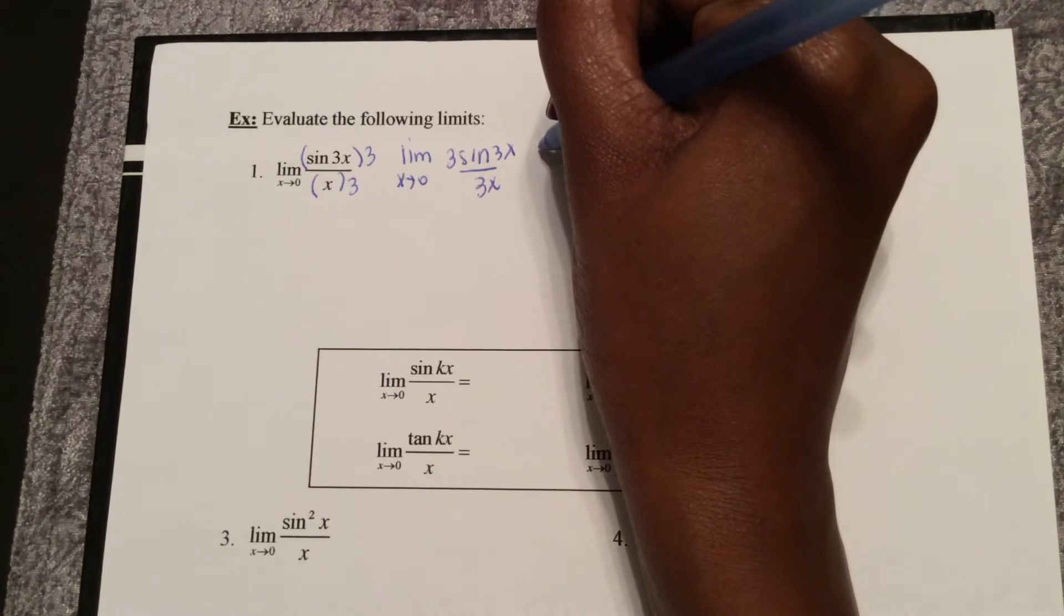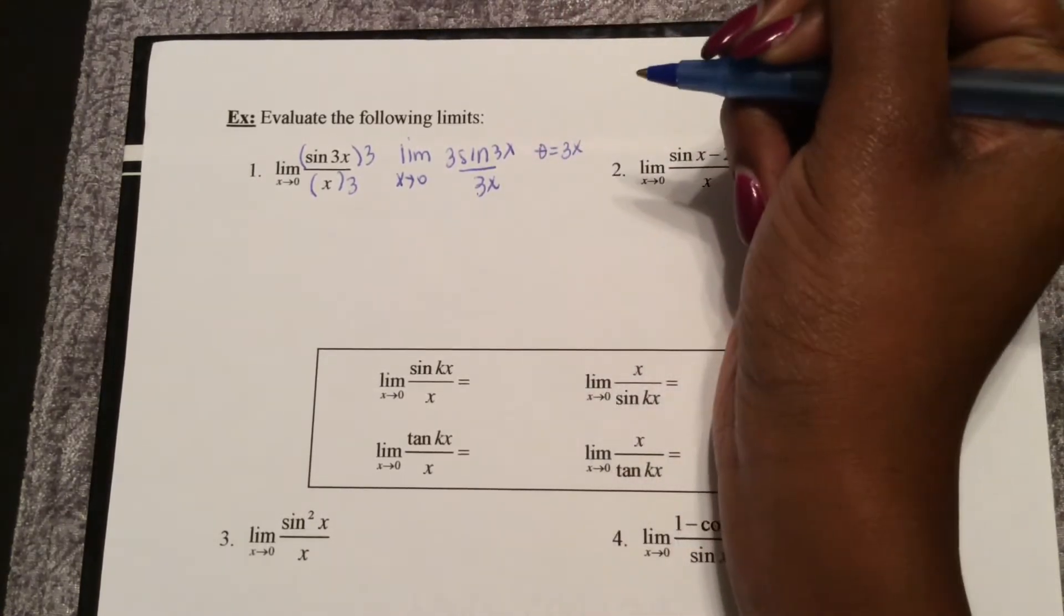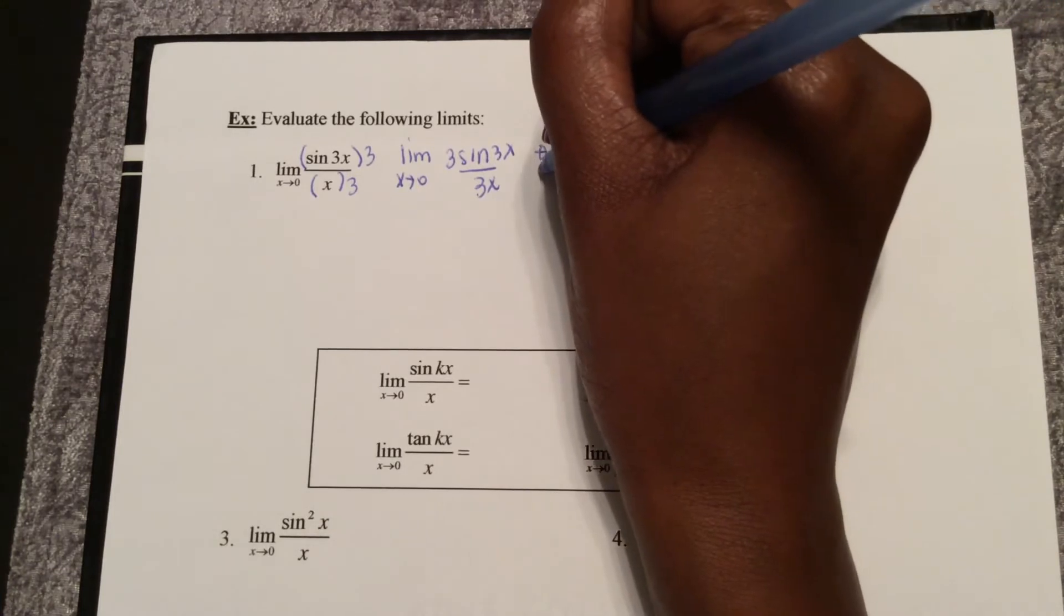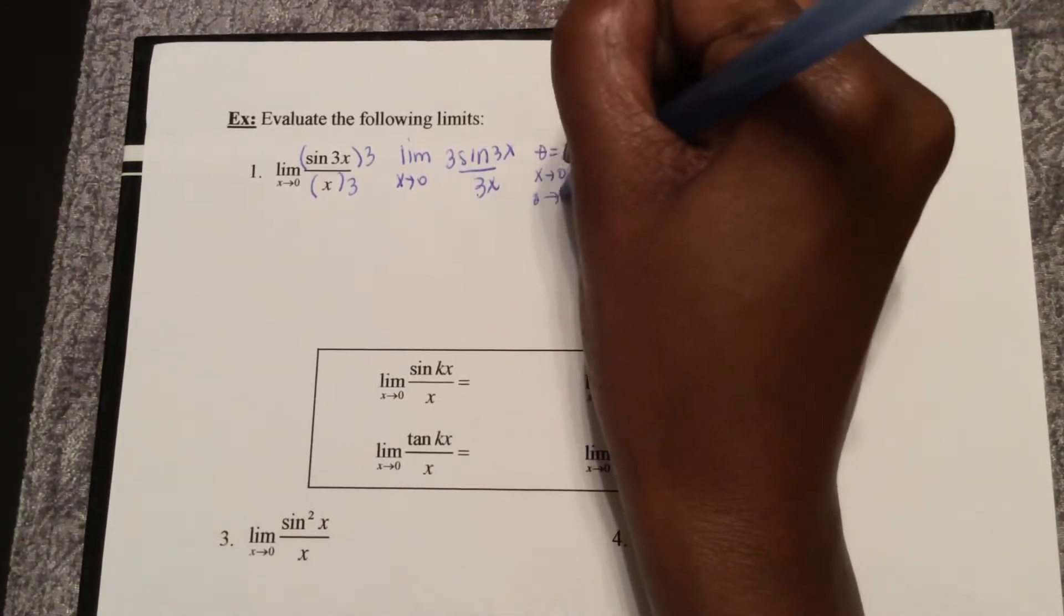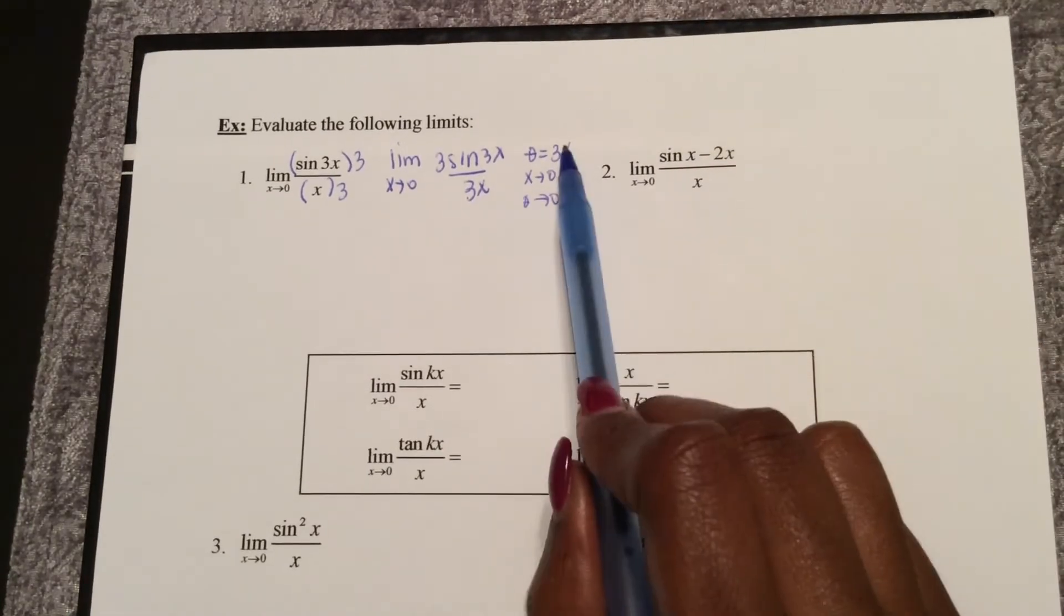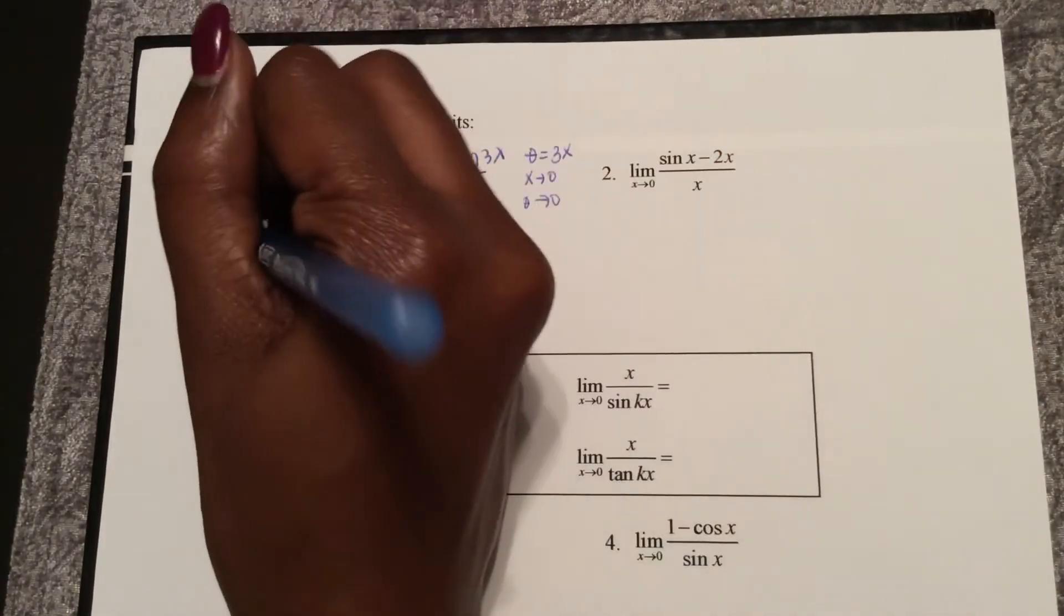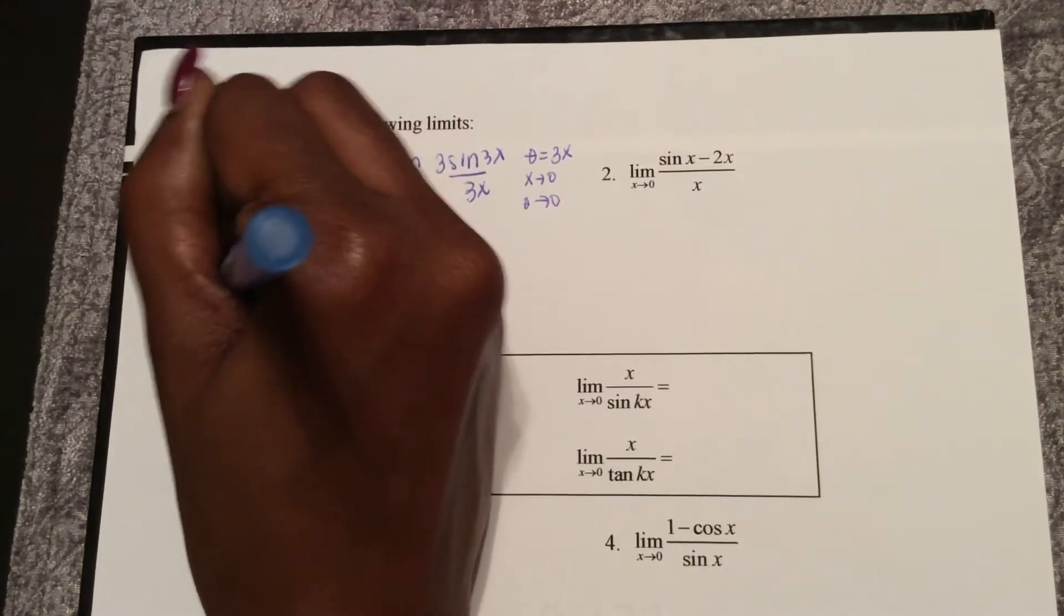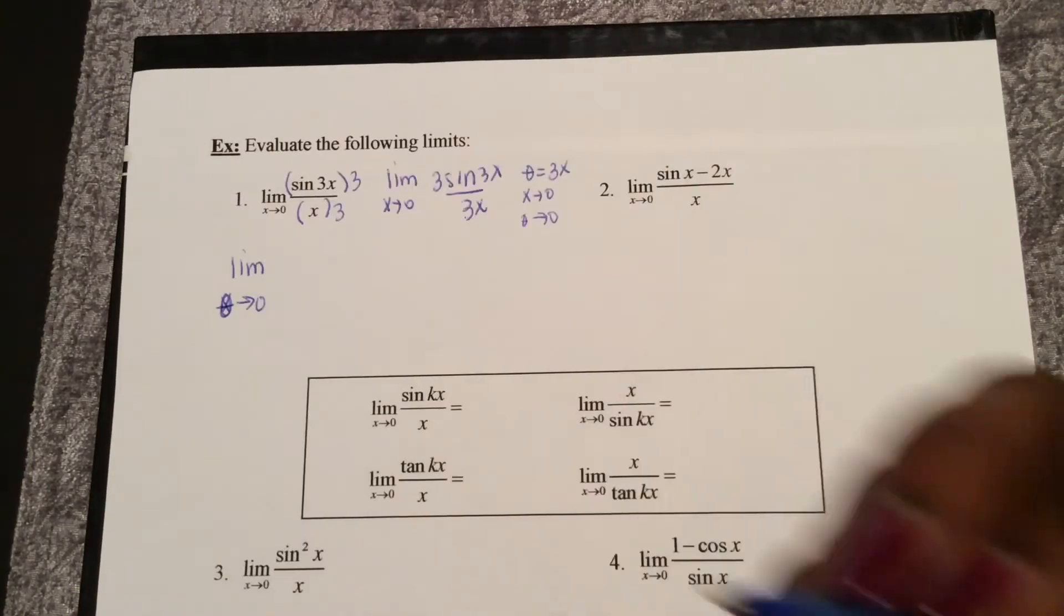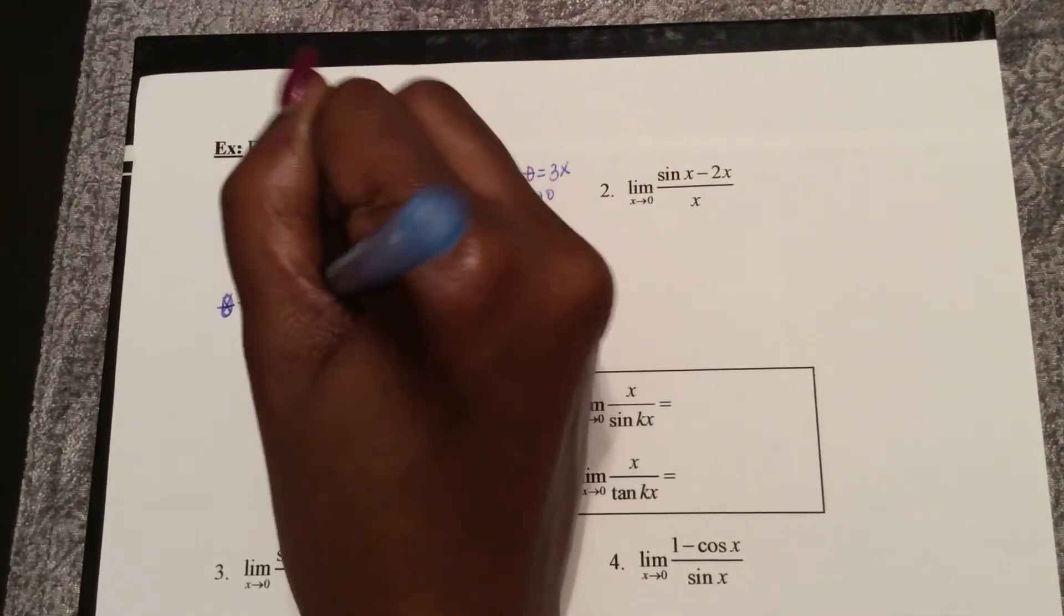So let me let theta equal 3x. And remember as x approaches 0, theta will also approach 0, because if x is 0, 3x is approaching 0.